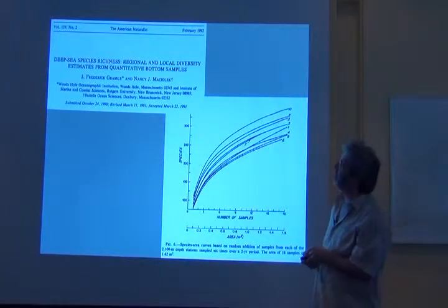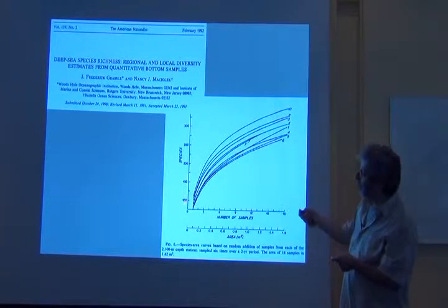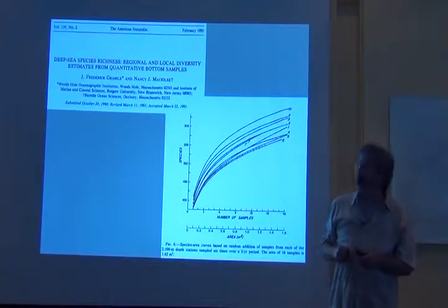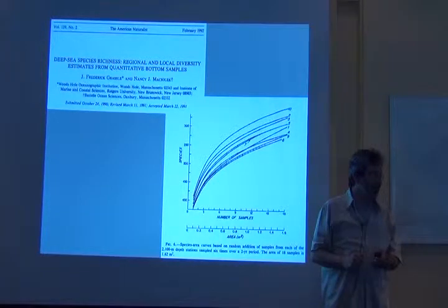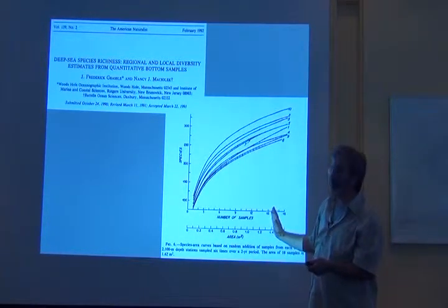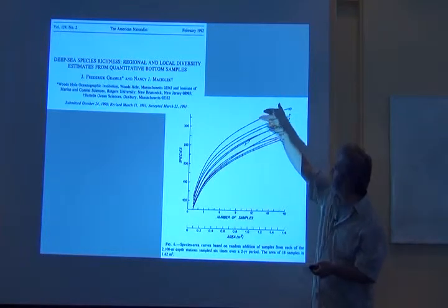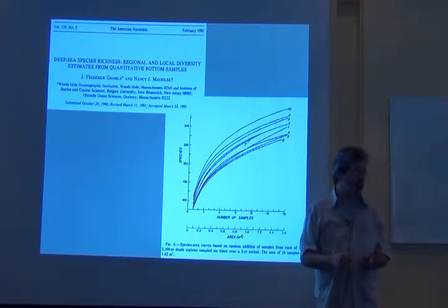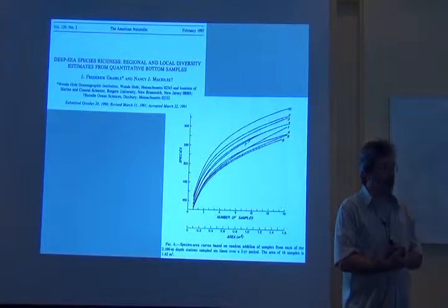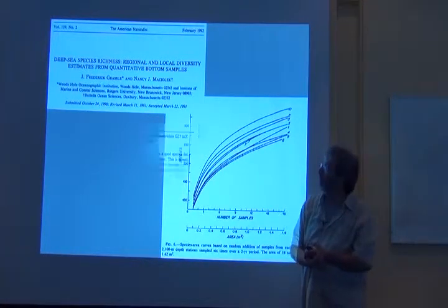Here we go, another one. Deep sea species richness, regional and local diversity estimates from quantitative bottom samples. Number of samples, number of species. We start to see them sort out. None of these inventories looks like it is in any sense done. We could chop through here. We could take a criterion of effort and say at 18 days, this one has 300 some species and this one has 260 species. But that's a little perilous, a little bit dangerous.